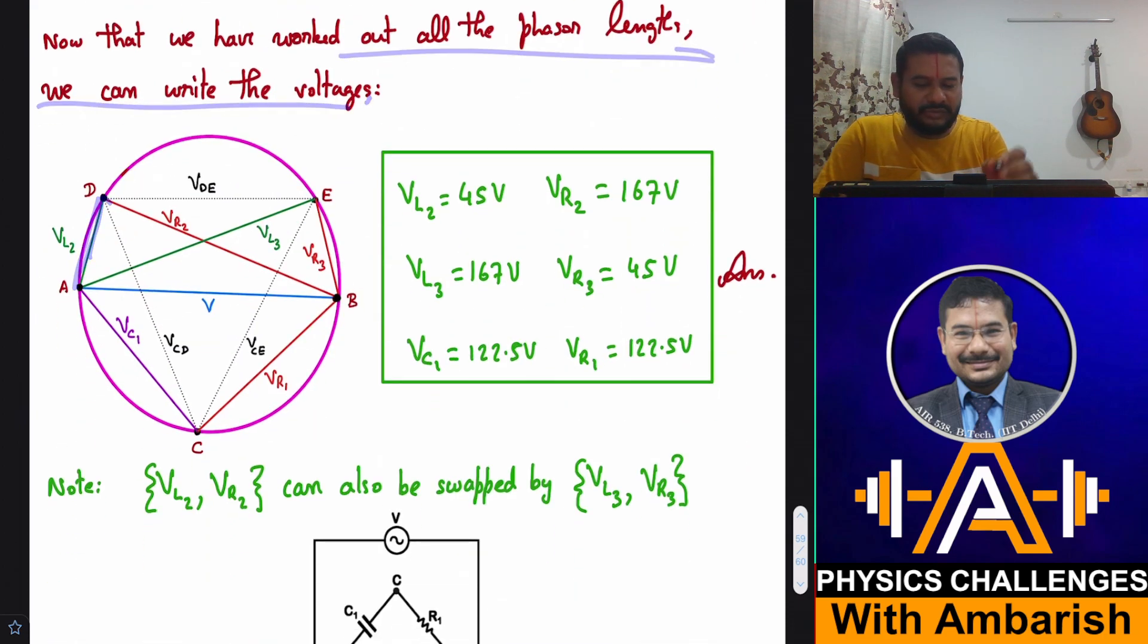Now that we have worked out all the phasor lengths, we can write the voltages. Just writing down the voltages instead of the lengths. VL2 is 45, VR2 is 167, VL3 is 167, VR3 is 45, VC1 is 122.5, and VR1 is 122.5. This is one of the solutions. You can see that since branch ADB and AEB are similar, both are LR branches, you can as well swap these two values. So you can swap 45 for 167 because in principle there is no difference between branch ADB and AEB. VL2, VR2 set can also be swapped by VL3, VR3 because in principle the branches look similar. That was my analysis for the problem.